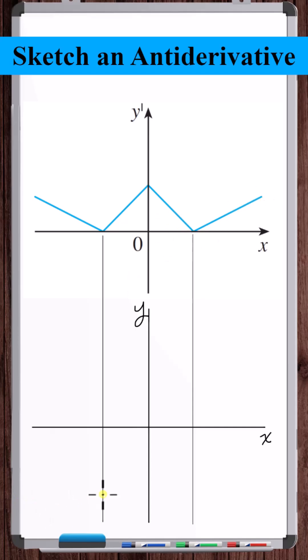From x equals negative infinity to this point, we have a downward facing parabola of positive slope, with vertex here, so slope zero. From here to here, we have an upward facing parabola, but steeper than this.